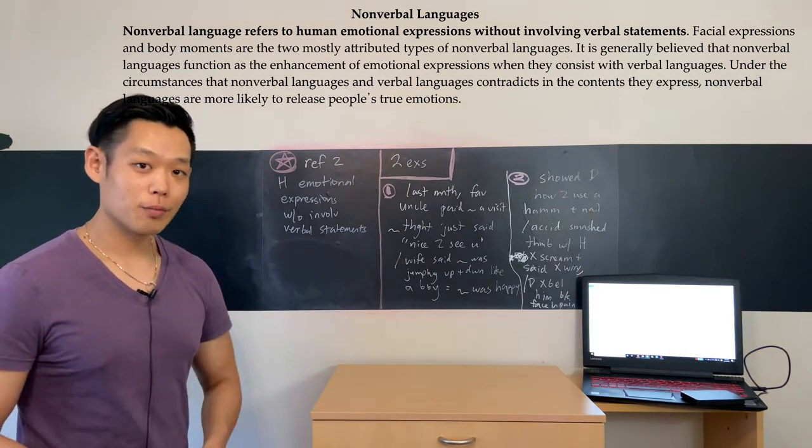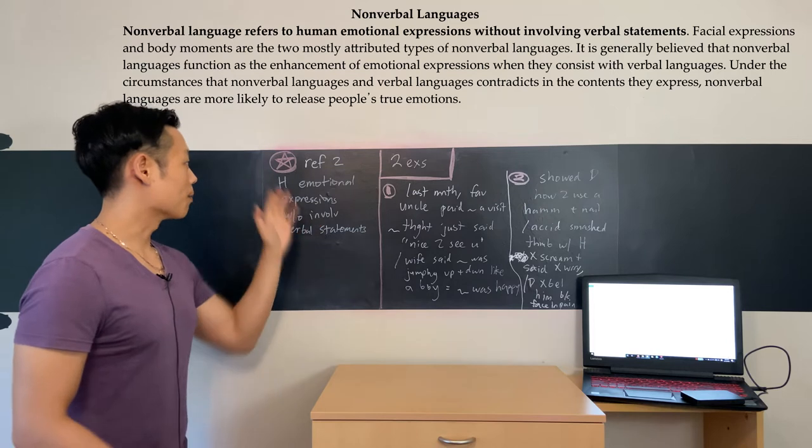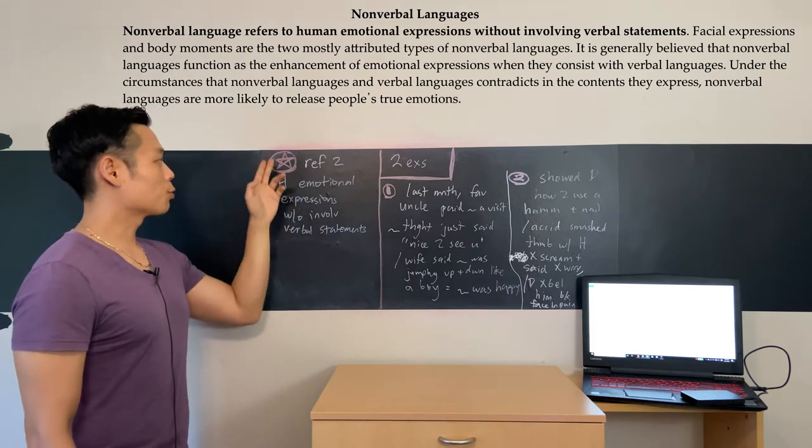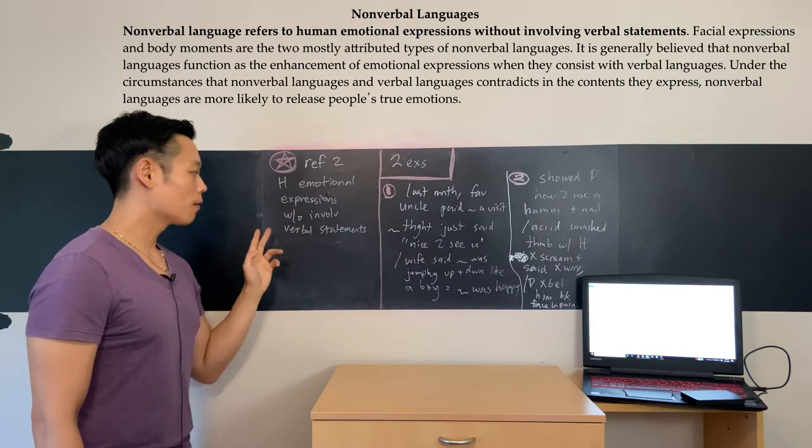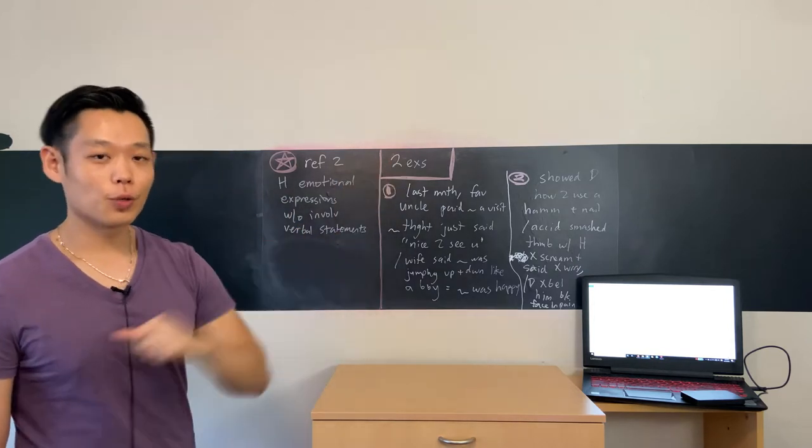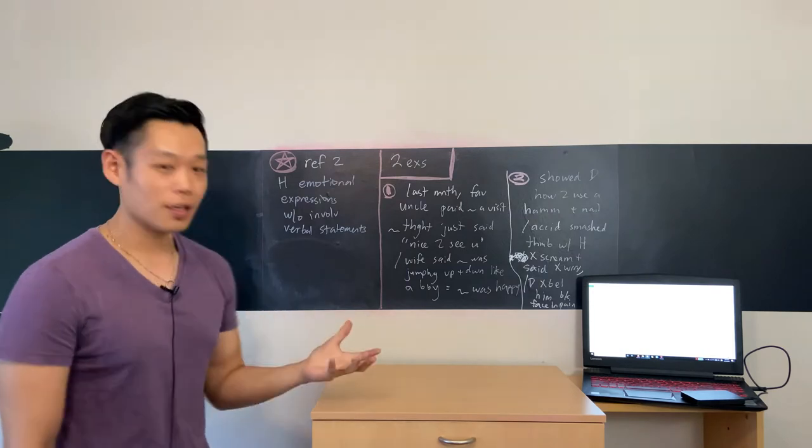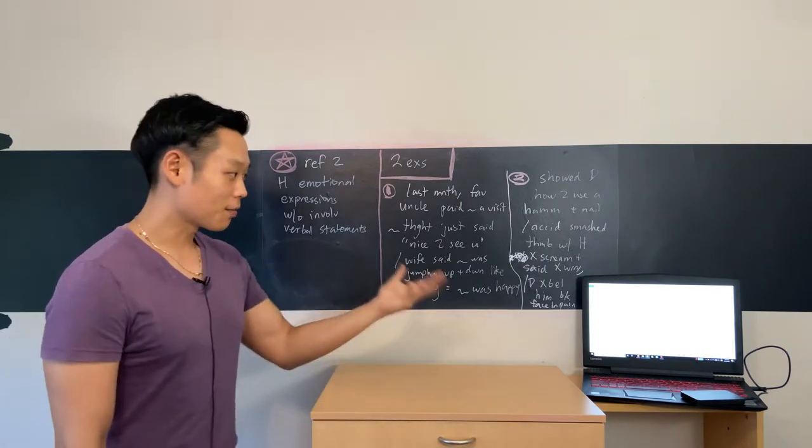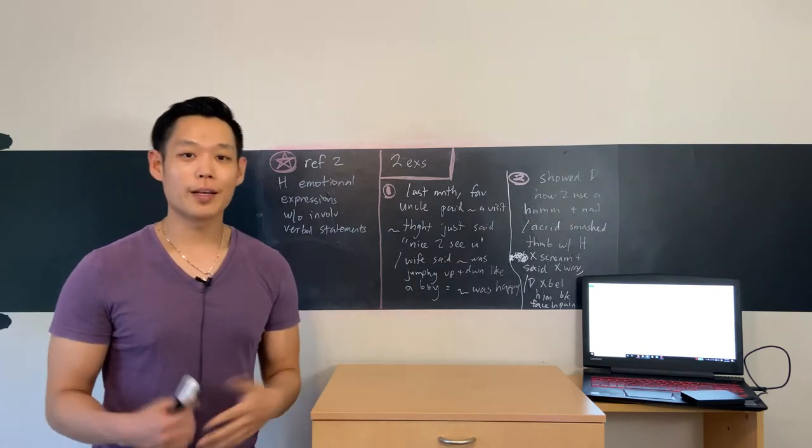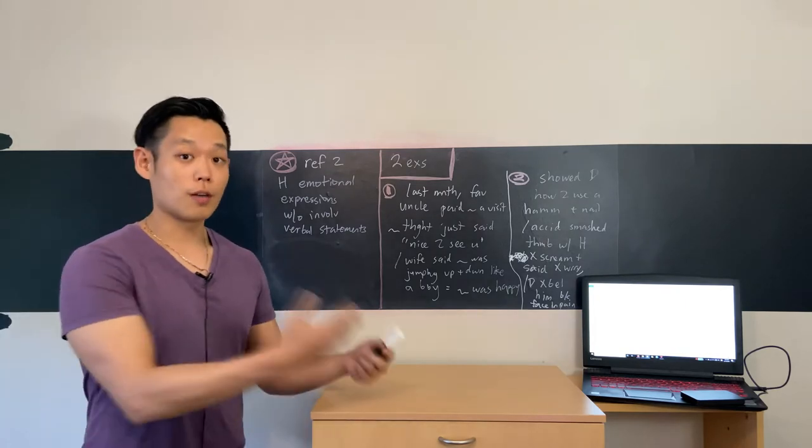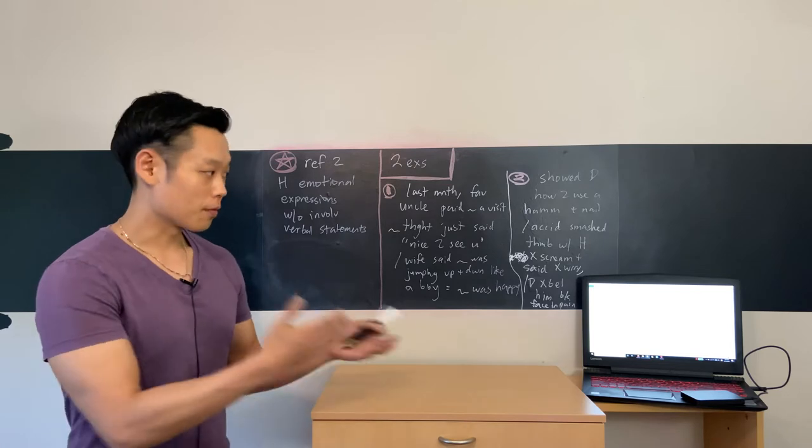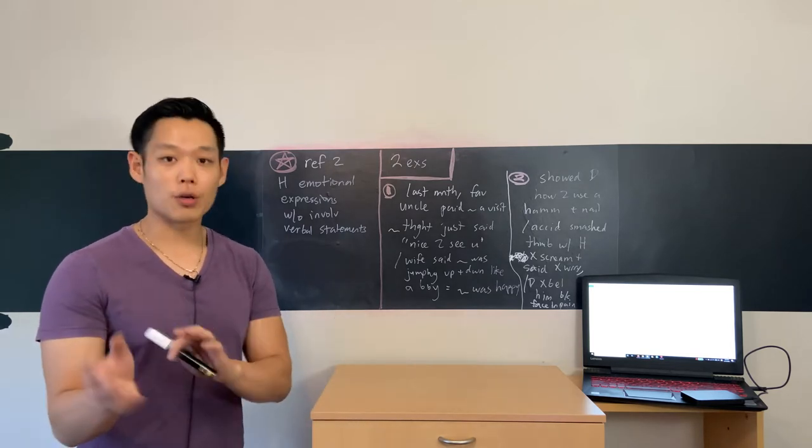That's the definition right here: non-verbal languages which refer to human emotional expressions without involving verbal statements. We're done with the reading passage because we have the definition. Thank goodness that the first sentence gave it to us in a way that we can just copy and paste. Now if you understood fully what non-verbal languages mean from the first sentence that we just read, then that's where you can just take your eyes off the reading passage.